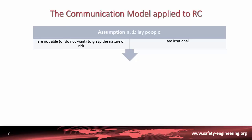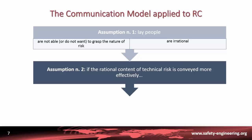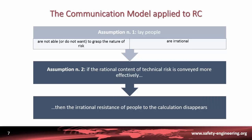The communication model applied to risk communication is generally grounded on two assumptions. Assumption number one: lay people, which means ordinary people, are not able to grasp the very nature of risk, or they do not want to catch the nature of a given risk, because they are irrational. Assumption number two is that if the content of a technical risk is conveyed more effectively and more efficiently, then the resistance of people to the calculation and to the assessment made by experts will disappear.